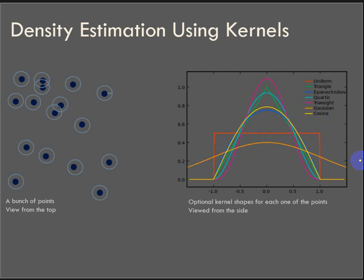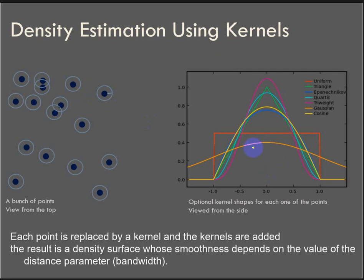And this spread is called the bandwidth, but it's the area under the curve equals an observation. So locations that have a high value, like a city with a huge population versus a city with a low one, you're going to have a larger or smaller area under this curve. Each point is going to be replaced by the kernel. When the kernels are added, the result is a density surface whose smoothness depends on the value of the bandwidth, the distance parameter, the search radius, this distance right here. And that's user defined.